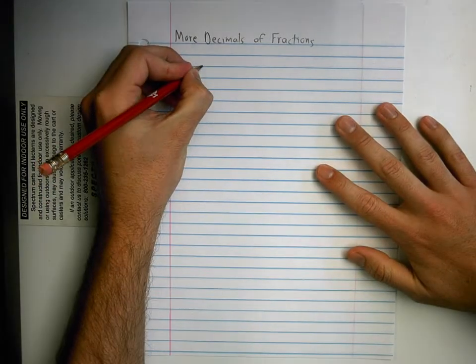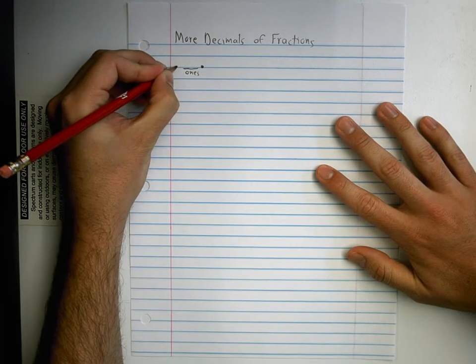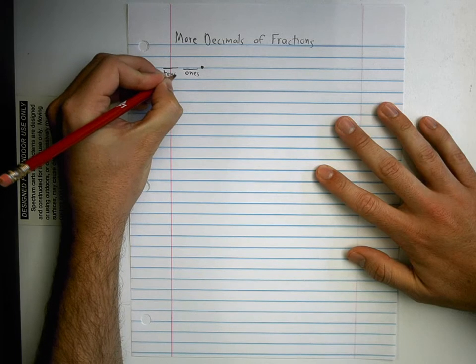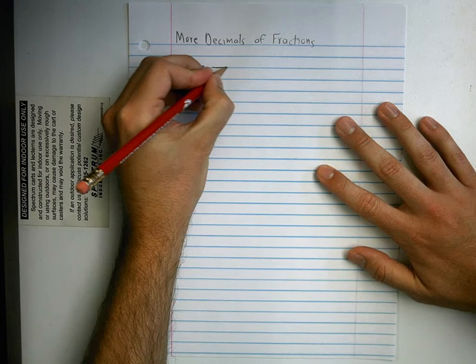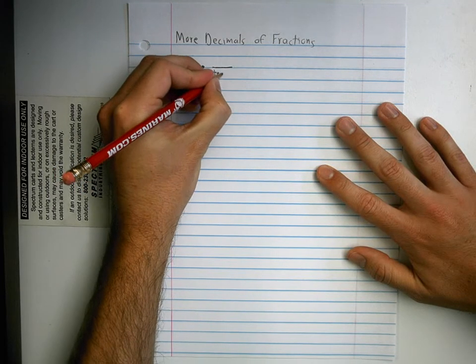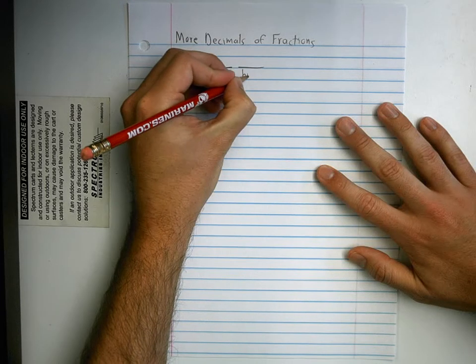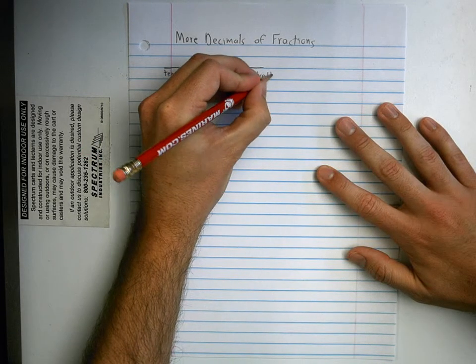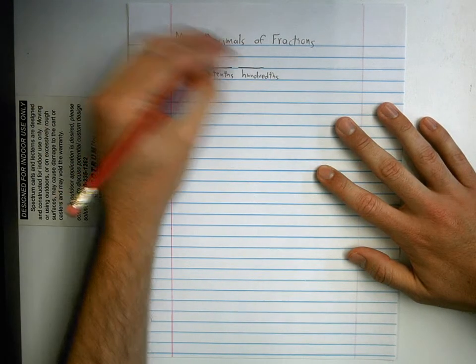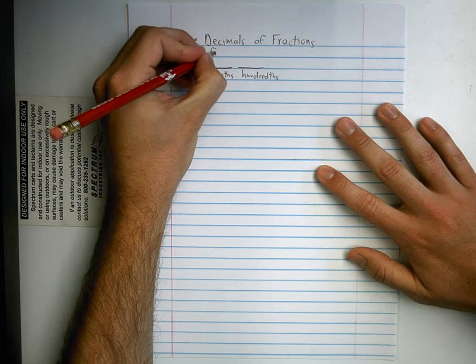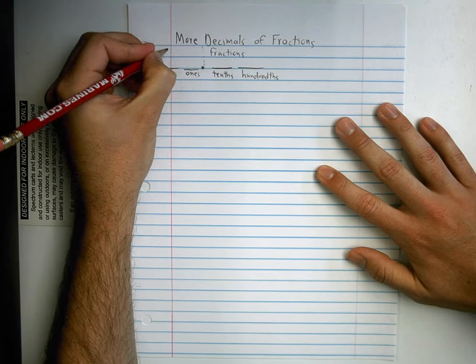We used our decimal point, and we know that this is where the ones are, and this is where the tens go. And then we talked about what places to the right of the decimal. We have the tenths place and the hundredths place. And we know that this side is when we have fractions of numbers, and this side is where our whole numbers go.